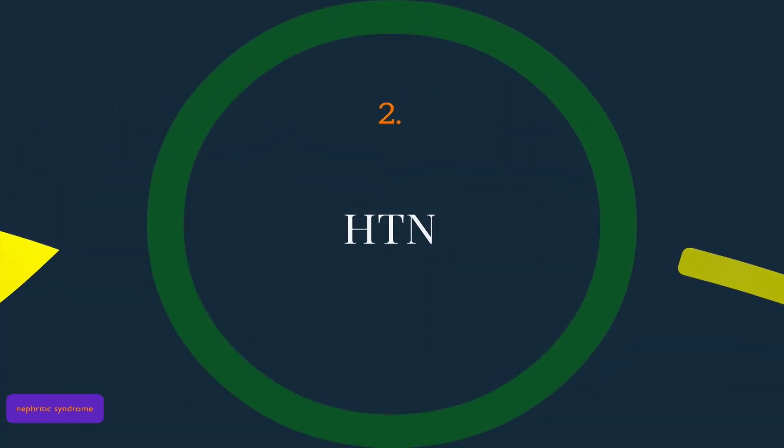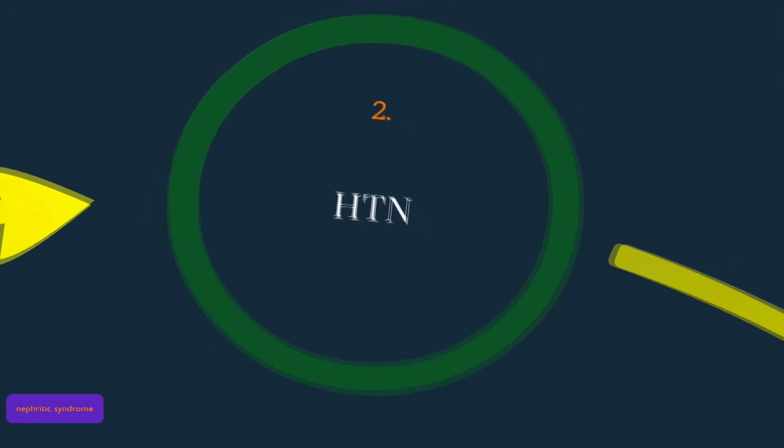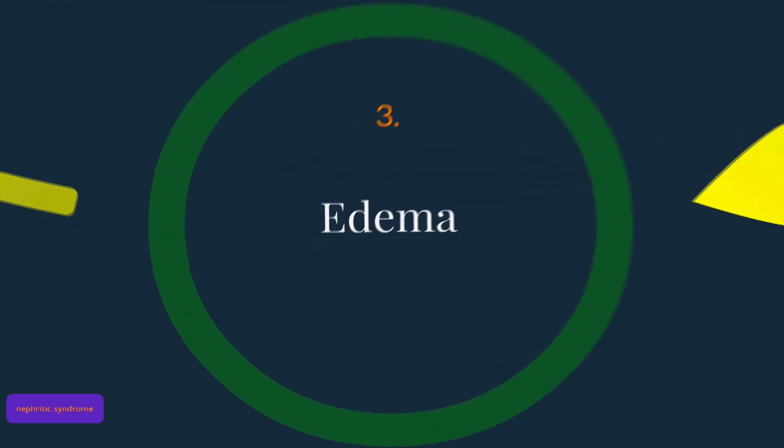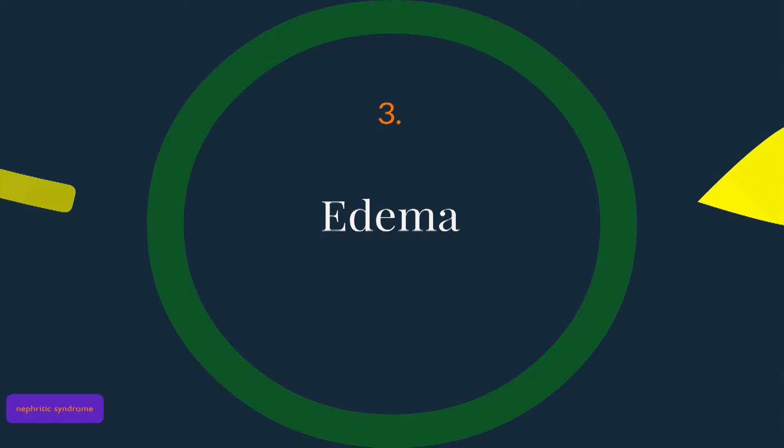Patients with nephritic syndrome also present with hypertension. This is because of swelling or inflammation of the glomerulus, particularly the juxtaglomerular apparatus. Edema can also be present in these patients, although it's not a major feature.